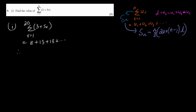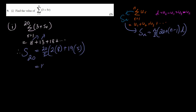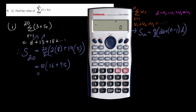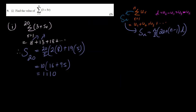So we apply the sum of n terms formula: S = n/2 · (2a + (n−1)d). Here n=20, a=8, d=5. So S = 20/2 · (2×8 + 19×5) = 10 · (16 + 95) = 10 × 111 = 1110.